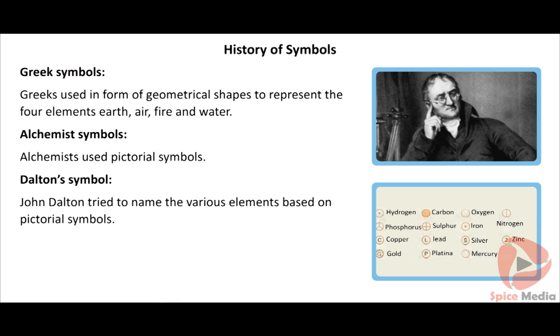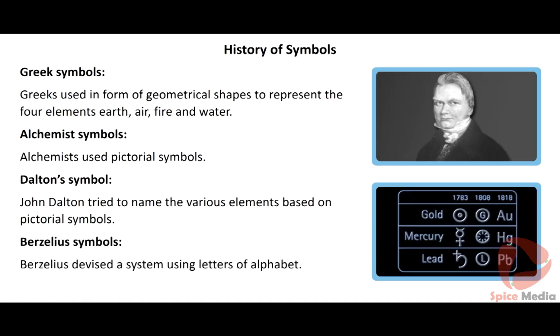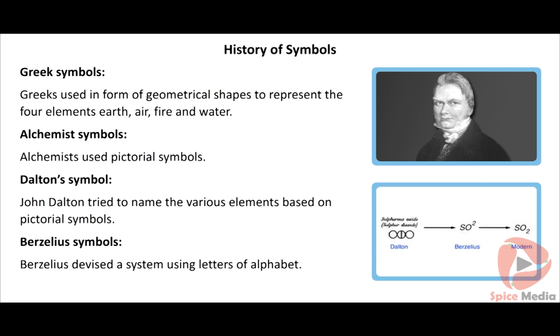Berzelius symbols: In 1813, John Jacob Berzelius, a Swedish chemist, devised a system using letters of alphabets. He argued that letters should be used because they could be written more easily than other signs.